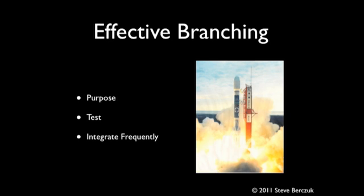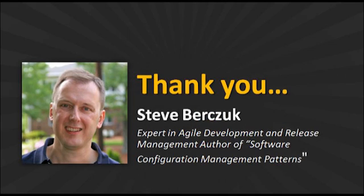Software configuration management practices and tools are part of the developer's basic toolkit. Like all tools, the right tool used correctly can help you get your job done. The wrong one, used without understanding, can distract you from your goal. Branching can help you improve your velocity, but be sure to be aware of the reasons you're branching and always ask yourself if the branch will deliver enough value to justify the cost. Always test and integrate frequently to avoid surprises. Remember, the real goal in an SCM environment is to help your team work more effectively. I hope this information can help you use Plastic SCM more effectively. Thank you.